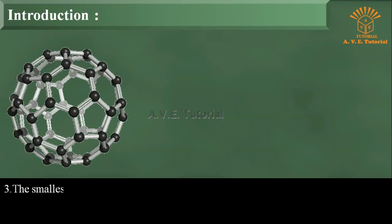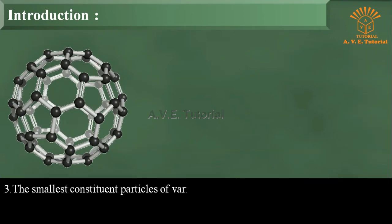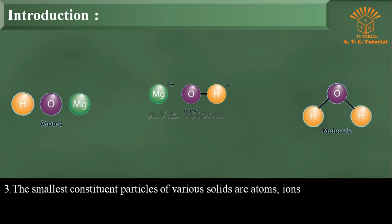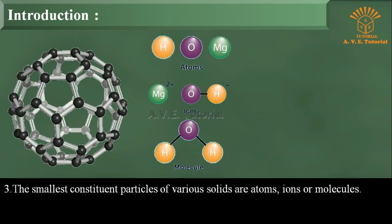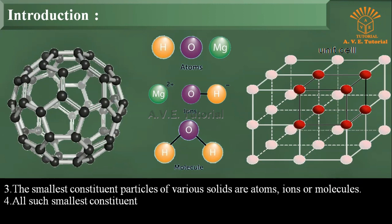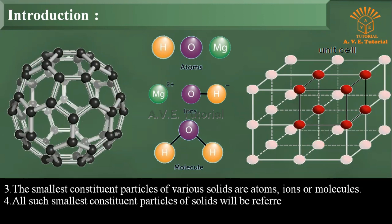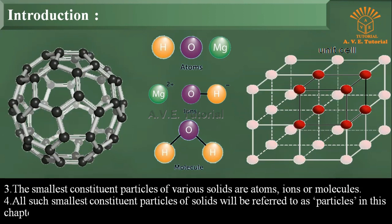The smallest constituent particles of various solids are atoms, ions, or molecules. All such smallest constituent particles of solids will be referred to as particles in this chapter.